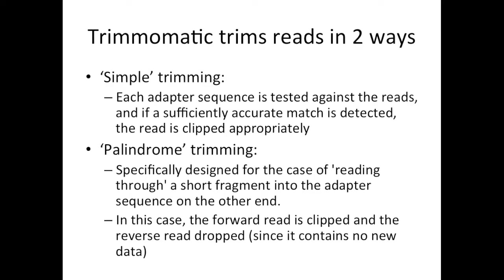Trimmomatic trims adapter contamination in two different ways. First is Simple Trimming — each adapter sequence is tested against the reads, and if a sufficiently accurate match is detected, the read is clipped at where the adapter is detected. In Palindrome Trimming, this is designated for the case where you have read-through of short fragments, where your fragment length is shorter than the sequencing length. In this case, you get read-through into the adapter at the other end. If it detects this, the forward read is clipped and the reverse read is dropped because it contains no new information.